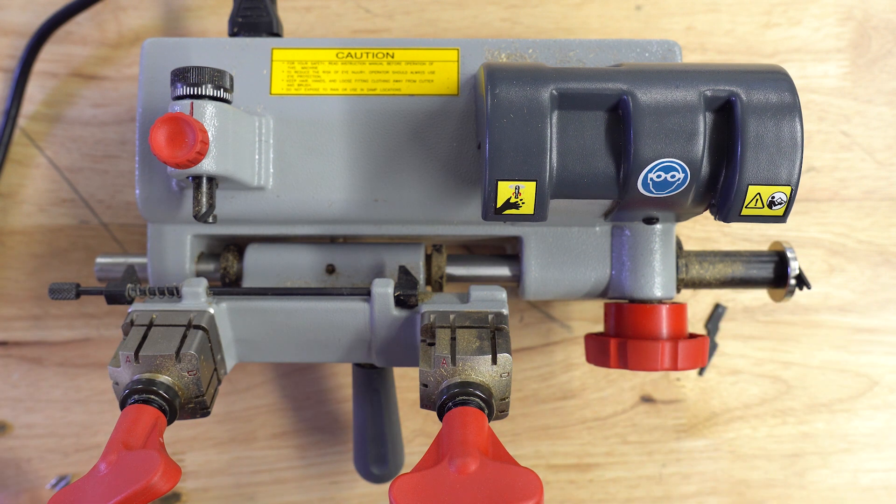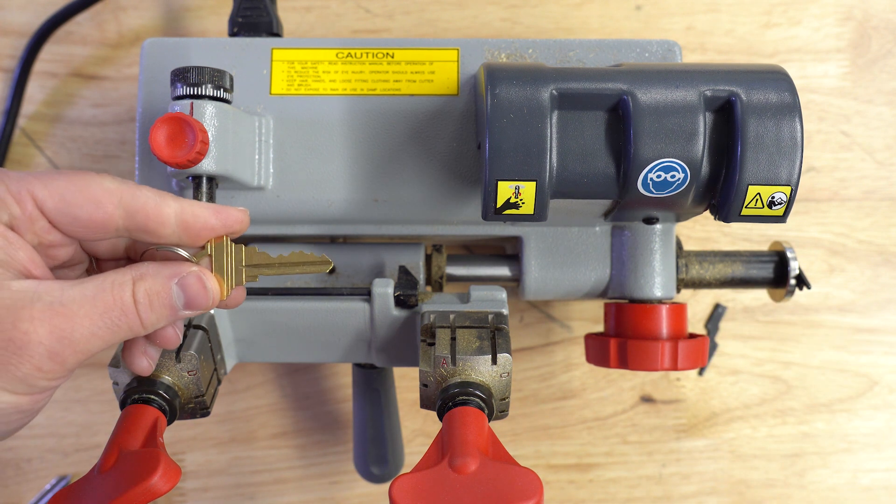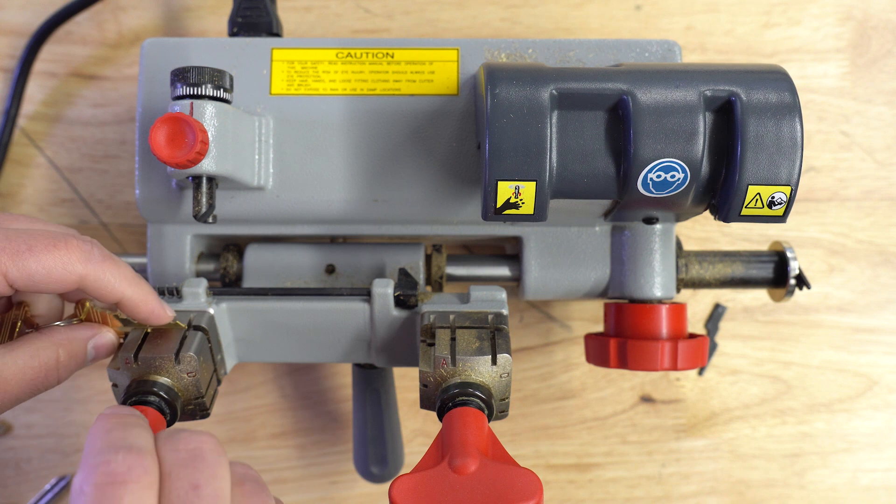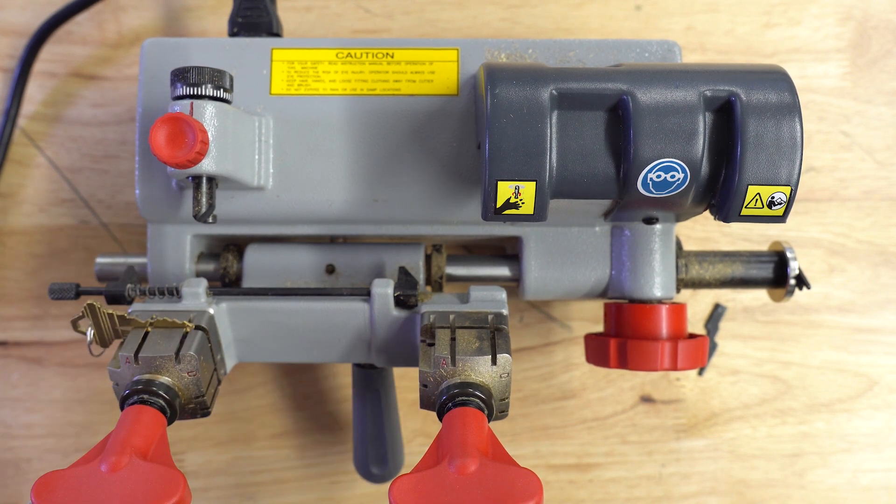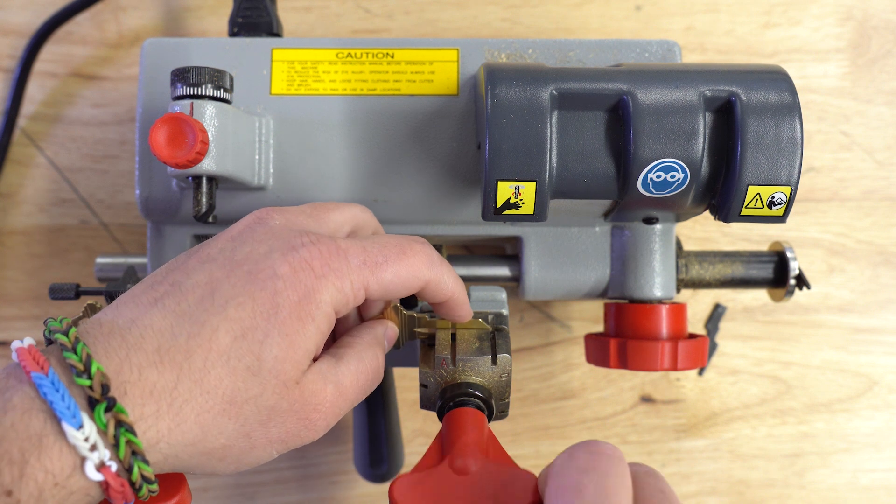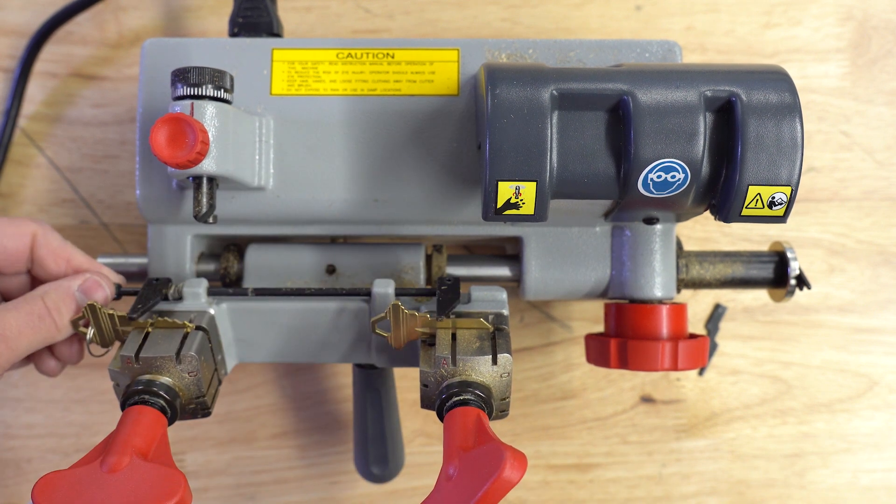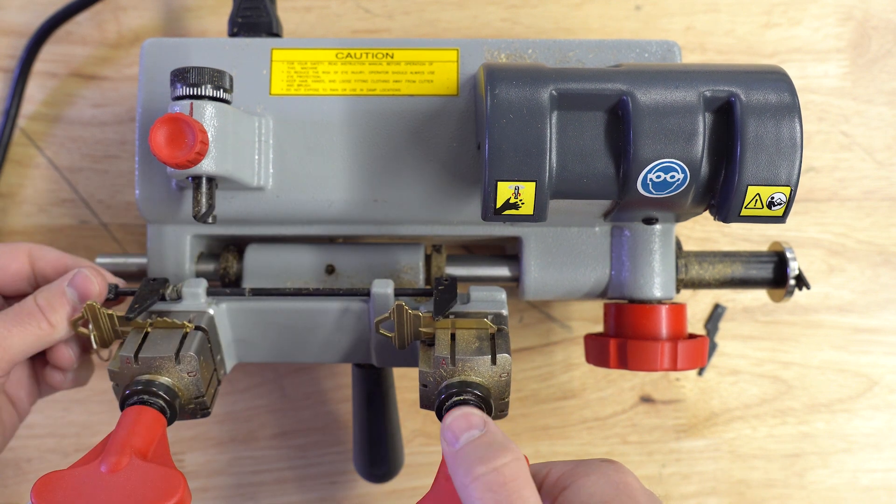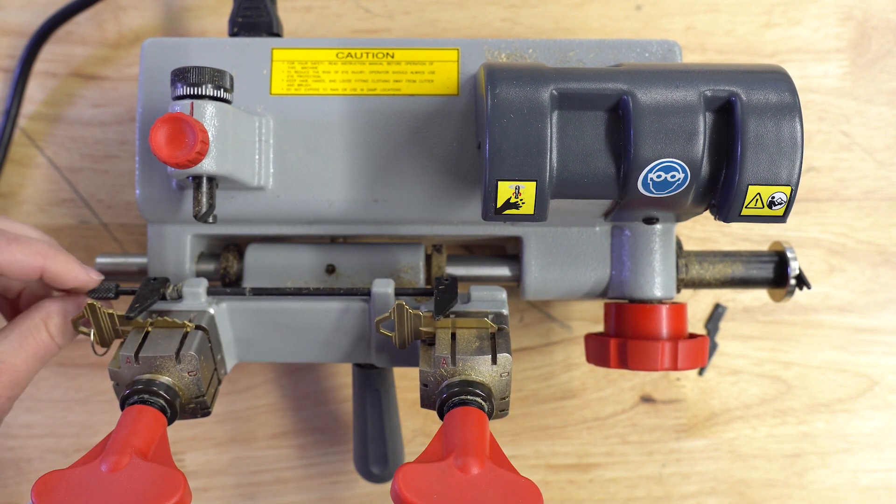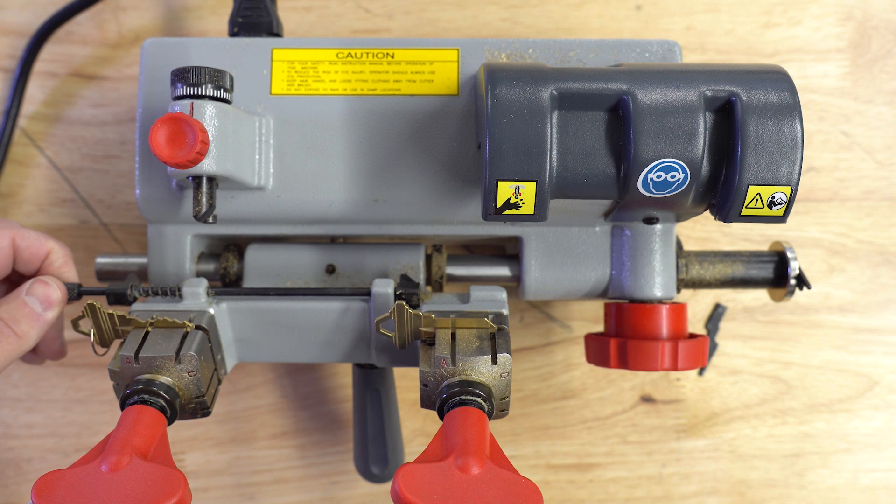Now, let's go ahead and cut a key. So I have an SC1 key right here. I'll put the one that we want to duplicate on the left side. We're going to put the blank on the right side. I'm going to flip up this little shoulder gauge. I'm going to align the keys just like that. Once we have that, we're going to flip this gauge all the way down.